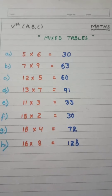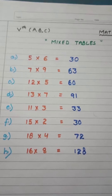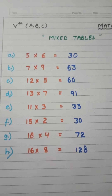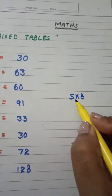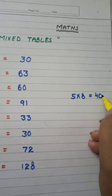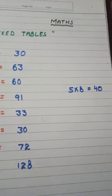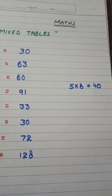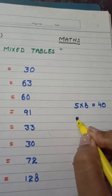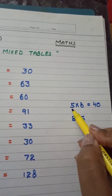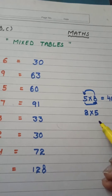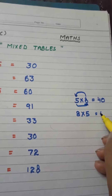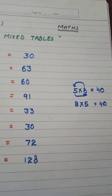This is how we write down the answer to any table if we learn them nicely. If we have to write five into eight, five eights are 40 — we read the table of five up to eight. If you are getting confused, you can read the table of eight instead: eight fives are also 40. The answer is the same. This is the rule of multiplication.